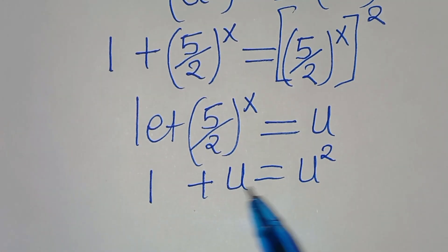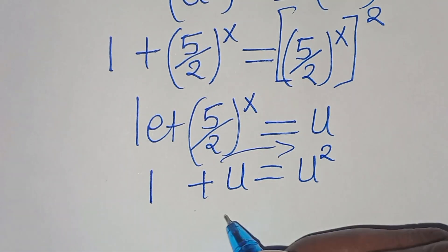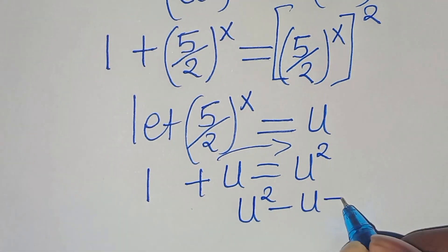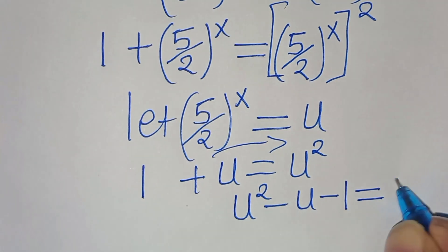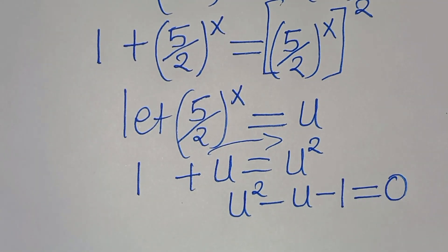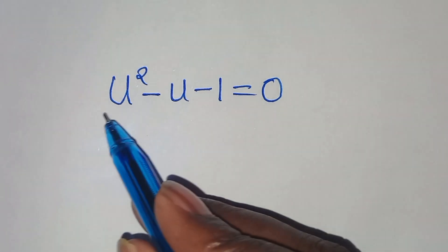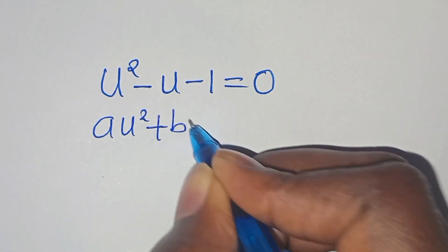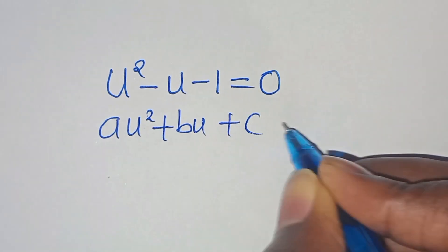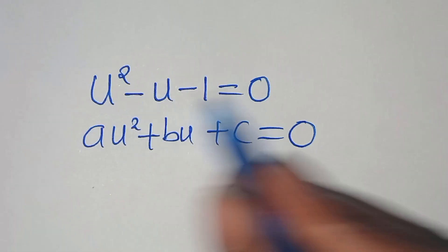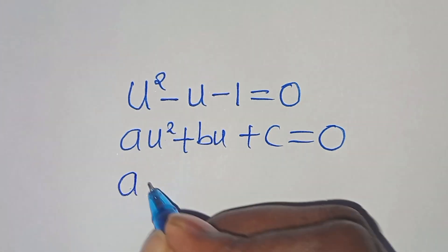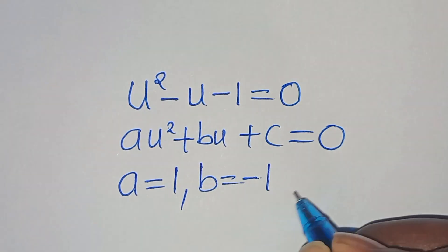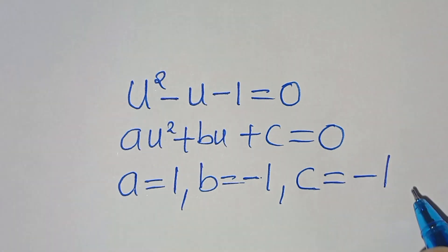Taking 1 plus u to the right hand side, we have u squared minus u minus 1 equals 0. This is a quadratic equation of the form au² + bu + c = 0. From this equation, a = 1, b = -1, and c = -1.